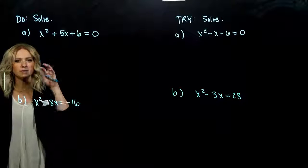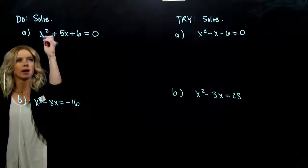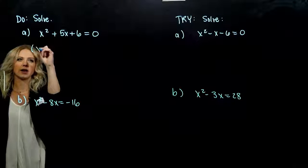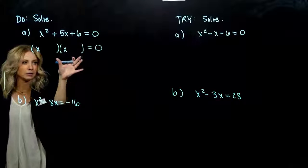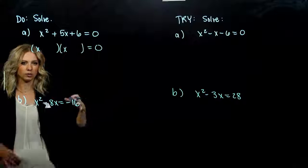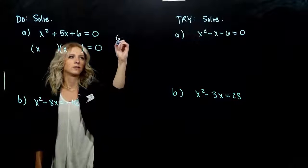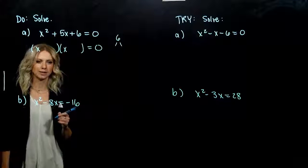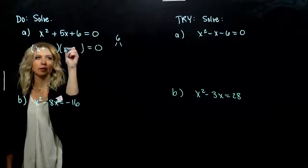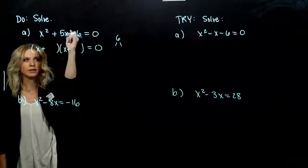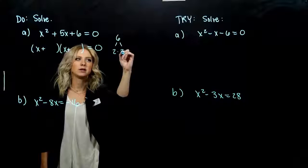How do we want to start factoring this? Think back to those rules we've talked about. I've got positives everywhere and a 1 out on the front, so automatically I know it's going to factor as x and x. We need to break up 6 into factors multiplying to 6 and adding to 5. They're both going to be positive, since I've got a positive when I add and a positive when I multiply.